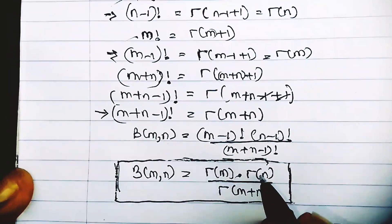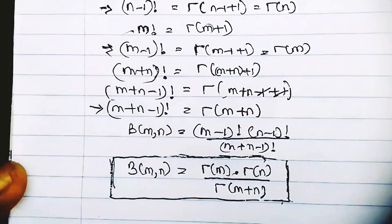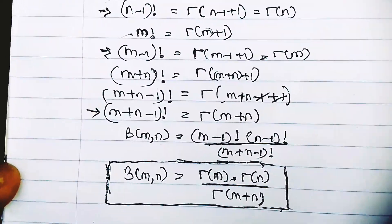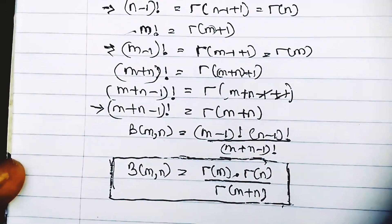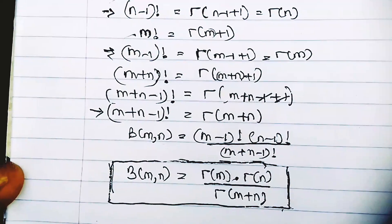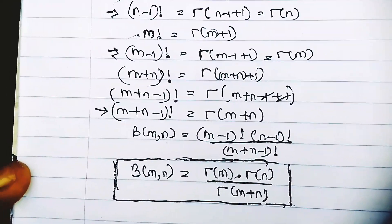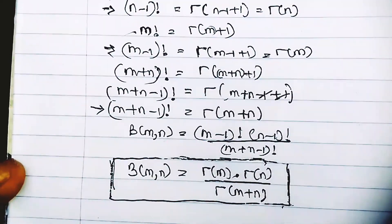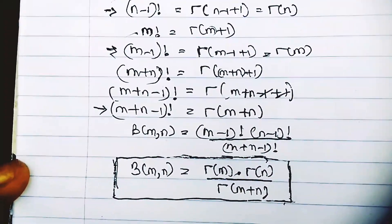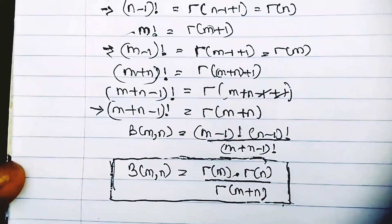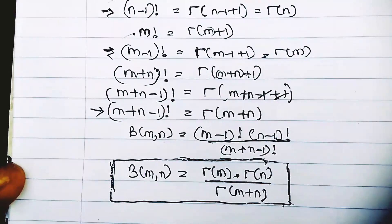This is what I call the relationship between gamma and beta functions — we have a gamma expression on the right and a beta function on the left. Let's take an example to see how we can apply this formula in solving questions. See you guys.